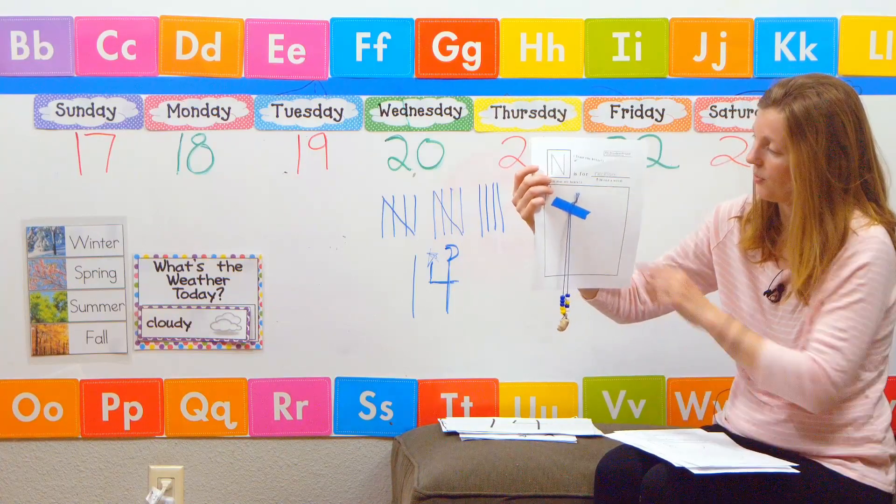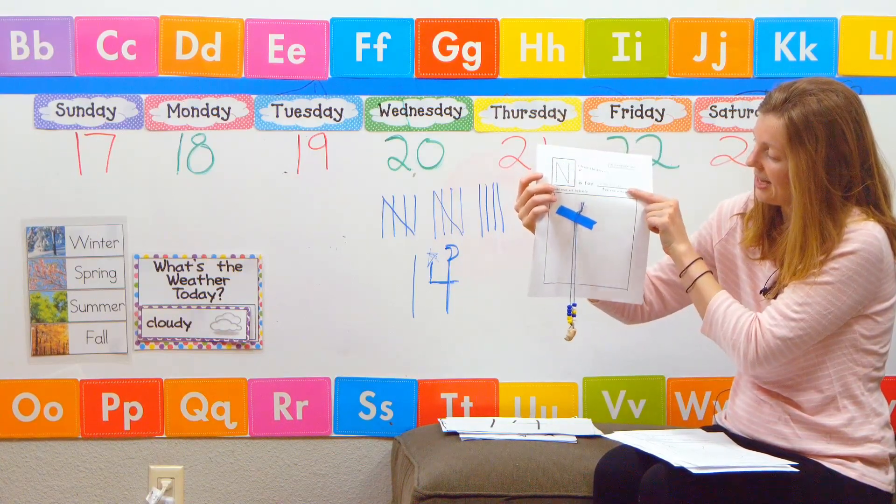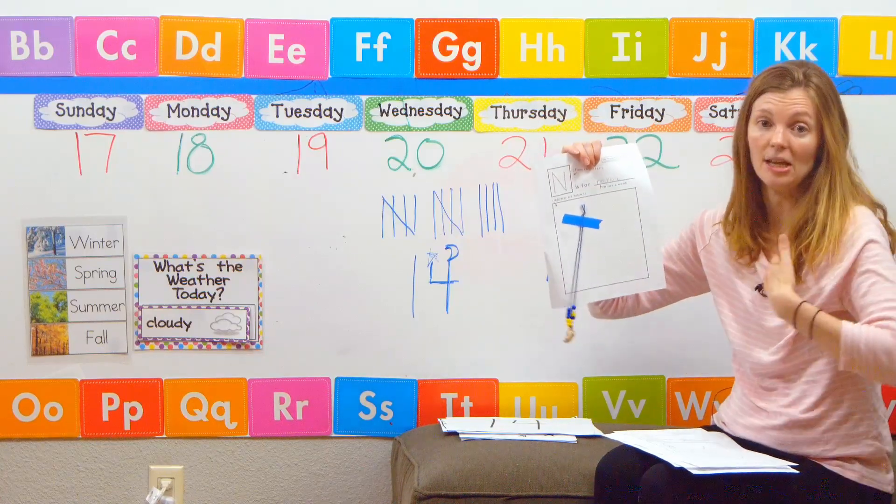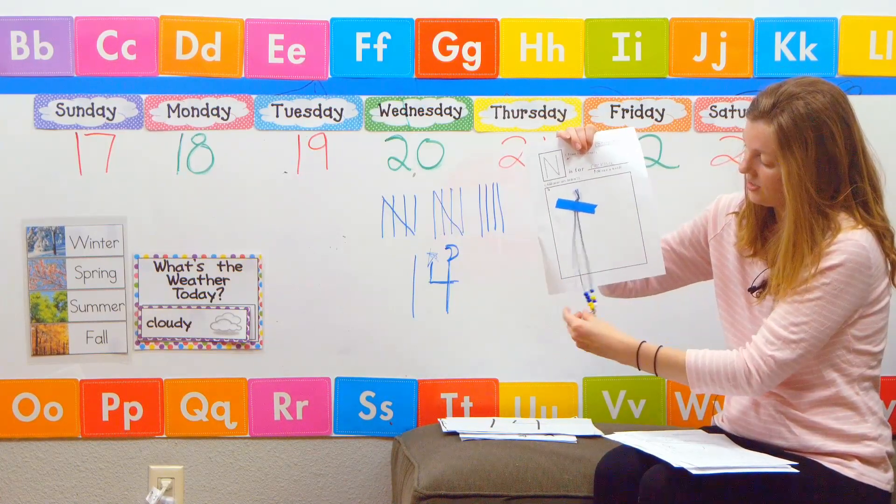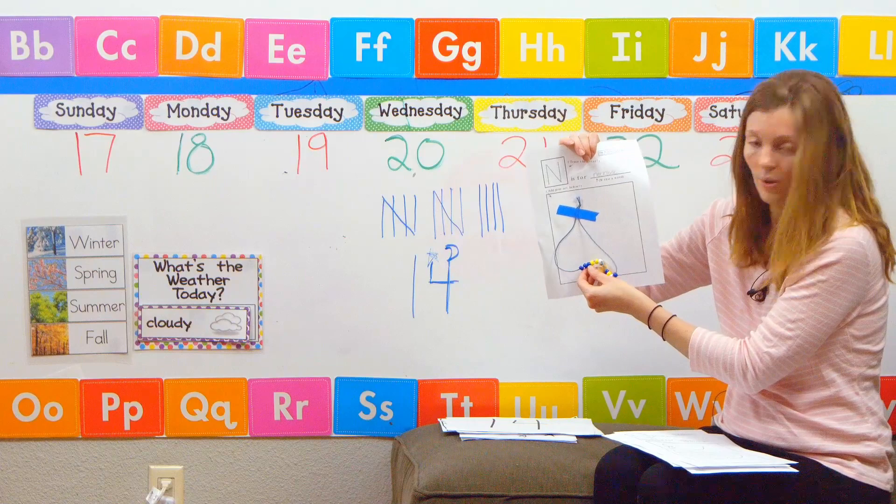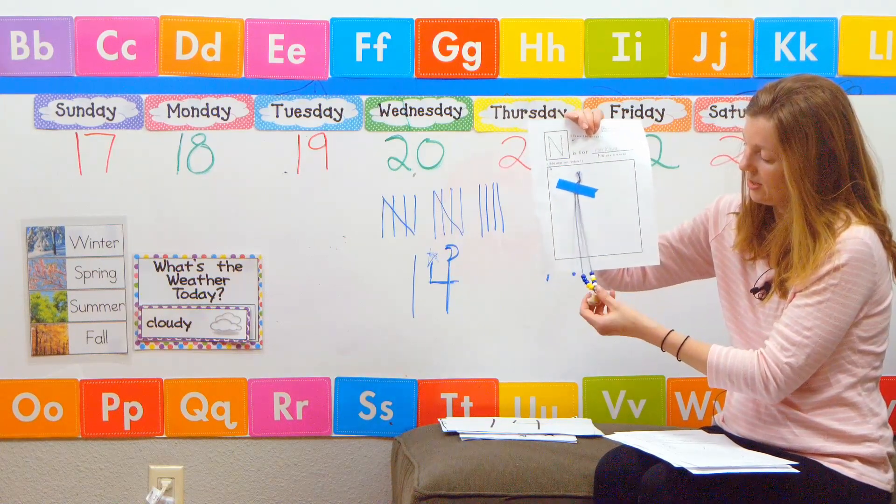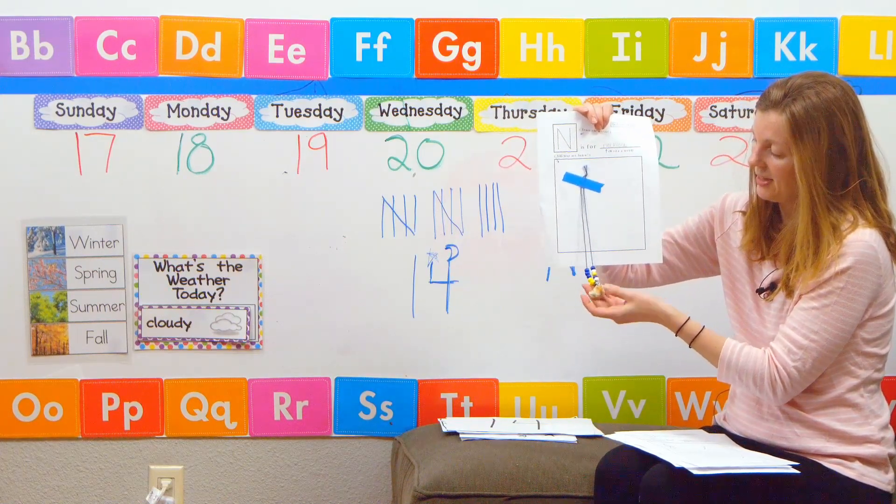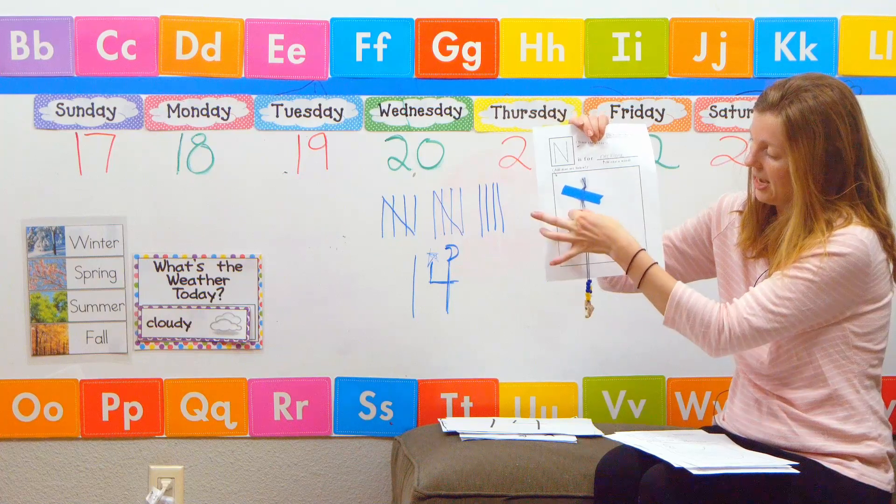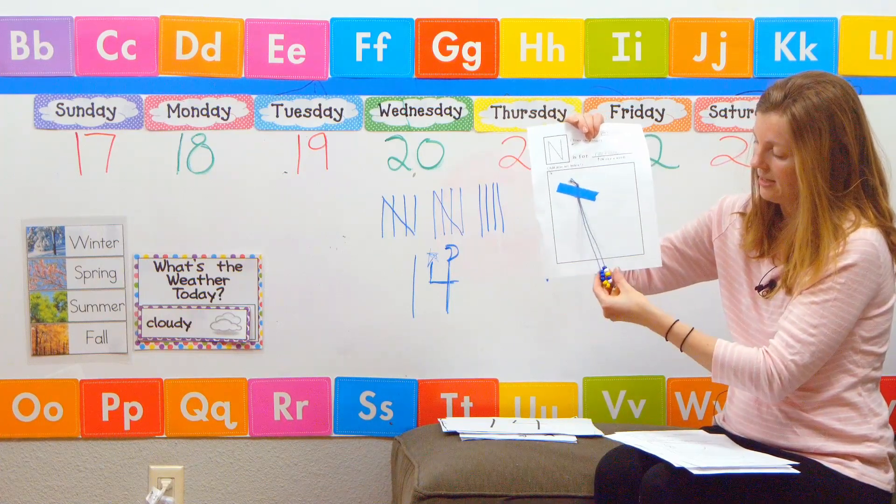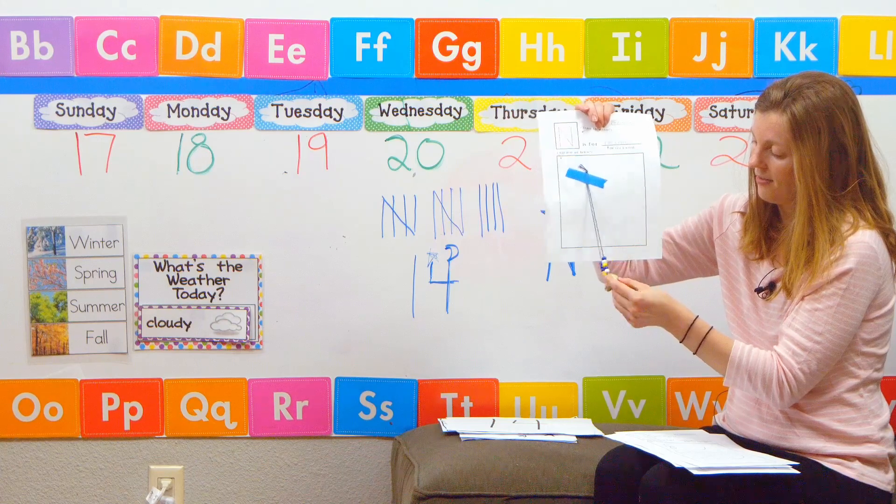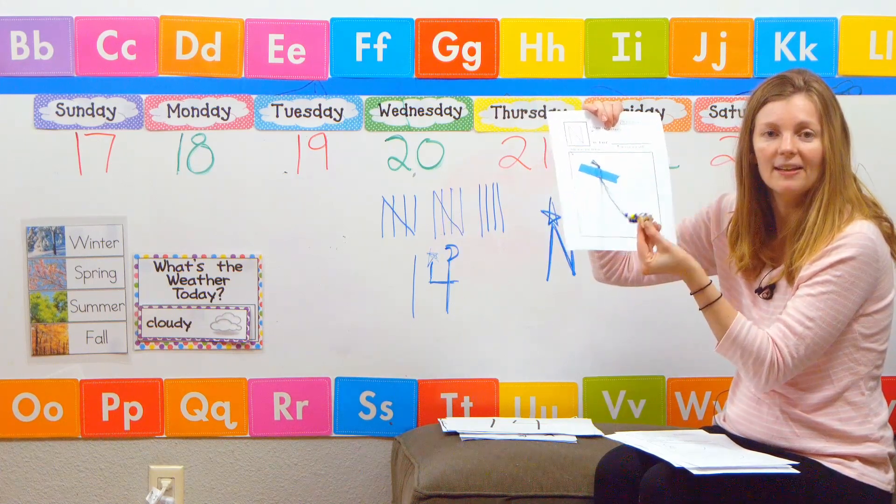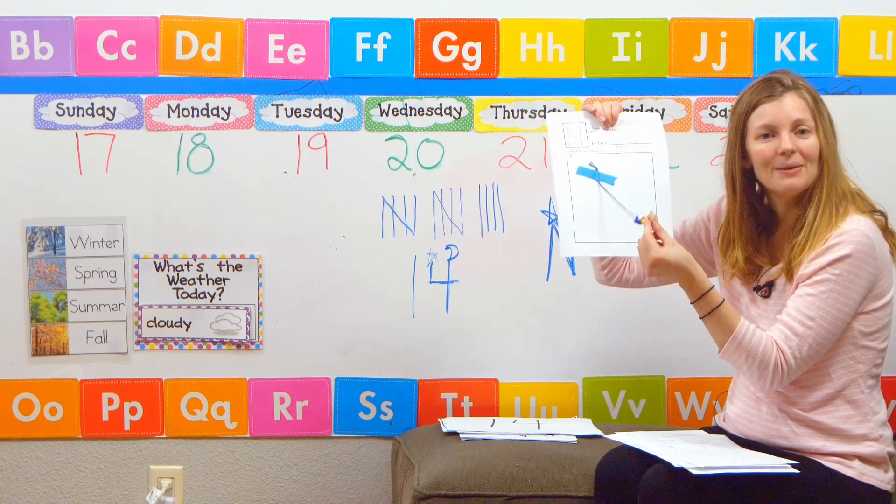And then my next one is N is for necklace. And so you can make a necklace that you can wear. And you can also make just a little necklace that can go in your book. And so my kids helped me make this little necklace. It's really simple. It just has some string, some beads. And then we have a seashell and it had a hole in it. And so we put that in the middle.